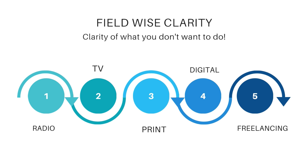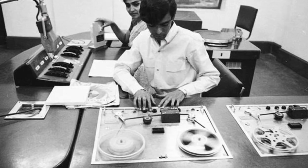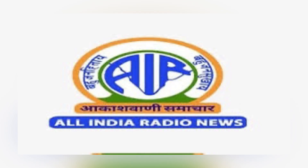Broadly, we have 5 fields: Radio, TV, Print, Digital, and Freelancing. You have to identify which ones you don't want to work in. Taking radio as an example — in radio, there is an entertainment industry and a news industry. The news industry in India falls under the government, because private channels are not allowed to produce news.